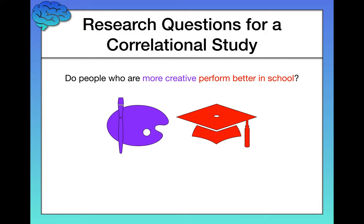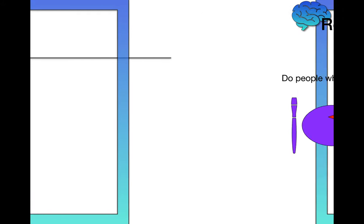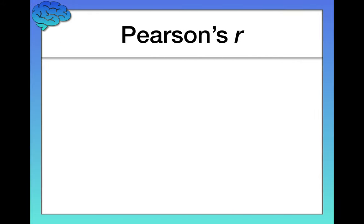And the end result of a correlational study is always going to be a correlation, which we measure or quantify using Pearson's r, named after the person who invented it, Carl Pearson. And I'm going to focus for the rest of this video, or at least the majority of it, on interpreting a correlation coefficient.